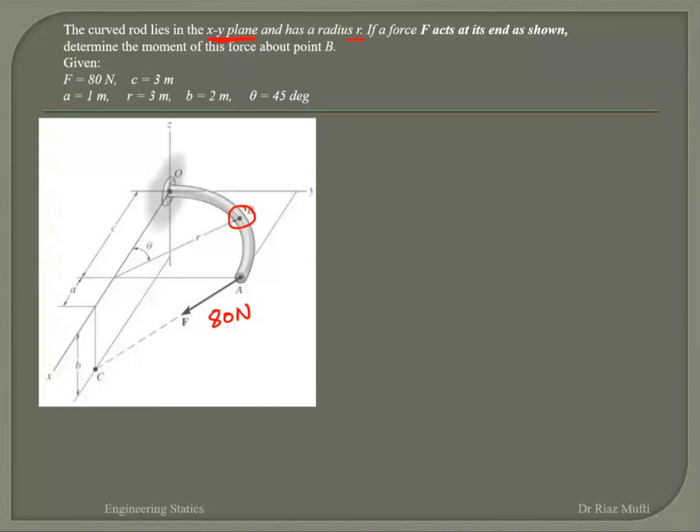Okay, so now you have to find the moment about point B. Last time you found the moment about point A. So what you did to find the moment caused by this force, you had a position vector O to A. And then once you found the position vector, you got your R and then you had your force in vector form.